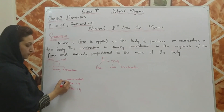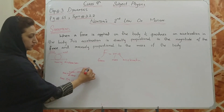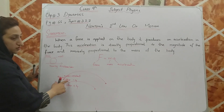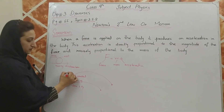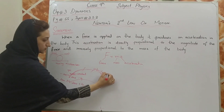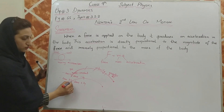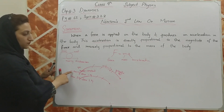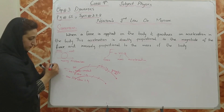Here I am taking force in the form of a man, and here in the form of a kid. The man throws the stone and it drops somewhere here; the kid throws the stone and it goes only this far. Both stones have the same mass, but the difference is in the force. The man's force was greater, producing greater acceleration; the kid's force was less, so less acceleration was produced.